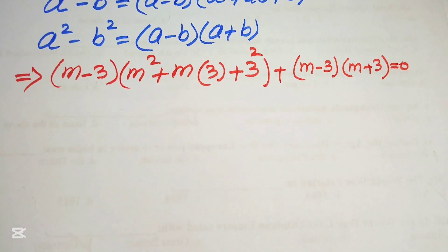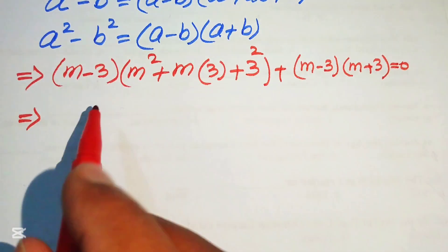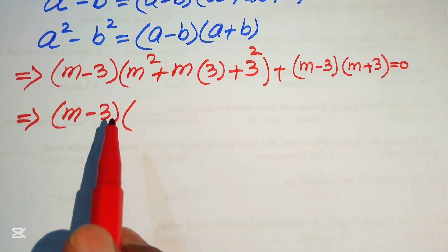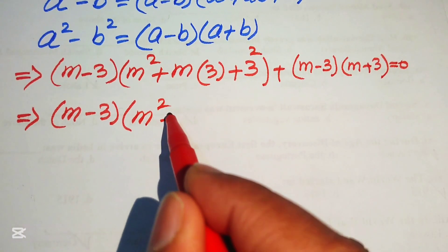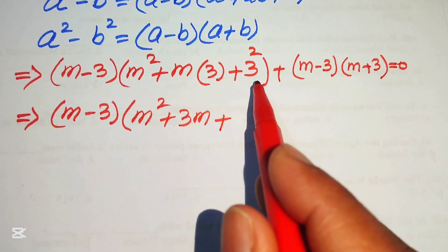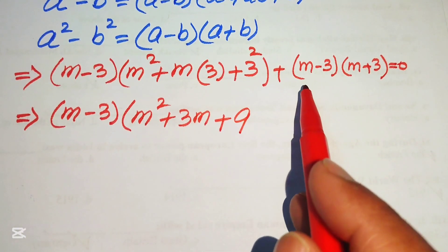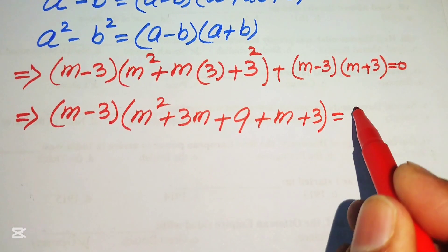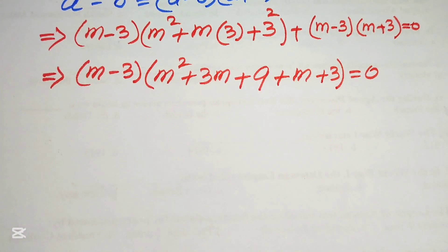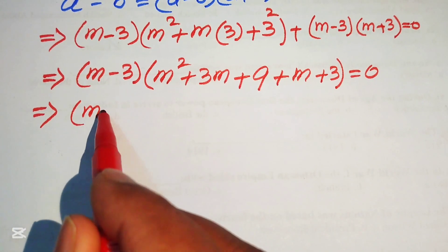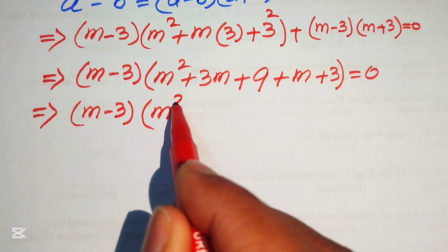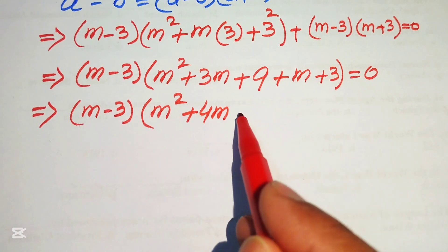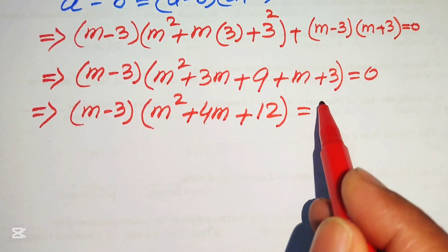Now we see that m minus 3 is the common term. We take out m minus 3 as common, and the remaining terms are m squared plus 3m plus 9 plus m plus 3, which gives m minus 3 times m squared plus 4m plus 12 equals to 0.